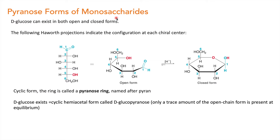D-glucose exists both in open chain form as well as in cyclic form. This is the Haworth projection of D-glucose, and it indicates the configuration at each chiral center. D-glucose contains an aldehyde group at the first position.